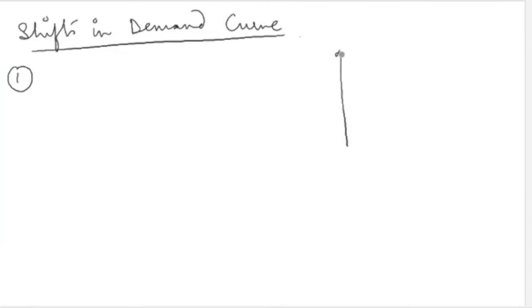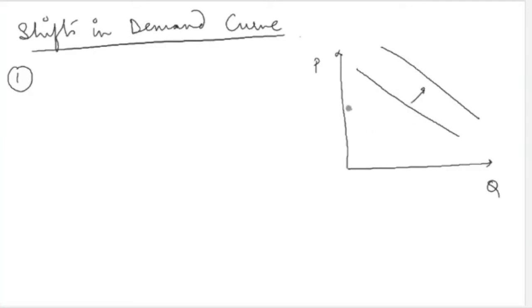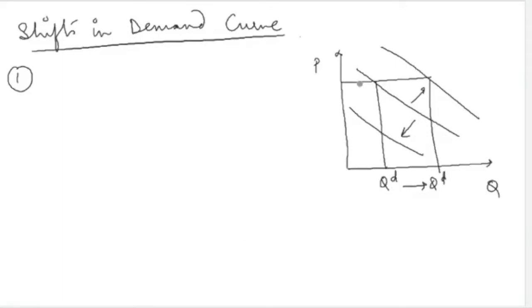How can shifts in the Demand Curve be depicted graphically? You have one Demand Curve. A shift means that this Demand Curve moves rightwards or leftwards. A rightward shift means that at the same price, you are now demanding more of the commodity — your quantity demanded has increased. If you were consuming 2 units earlier, now you are consuming 4 units. A leftward shift means that at the same price, you are consuming lesser.